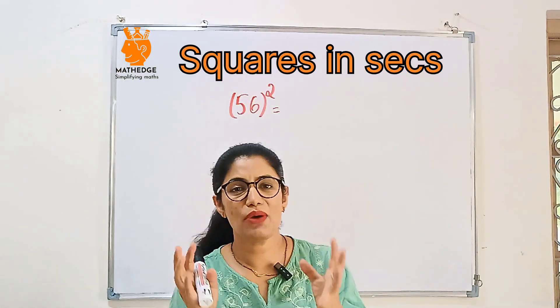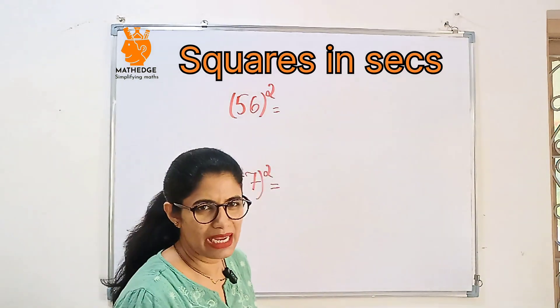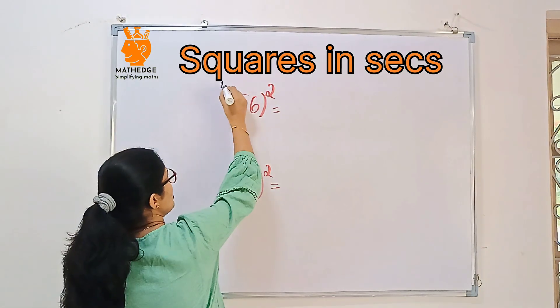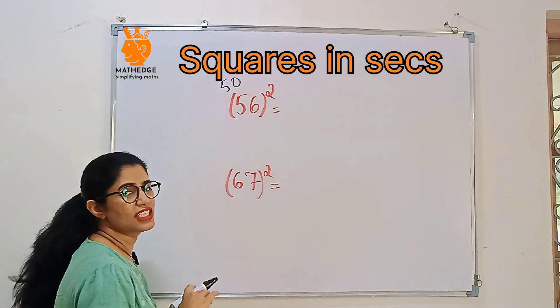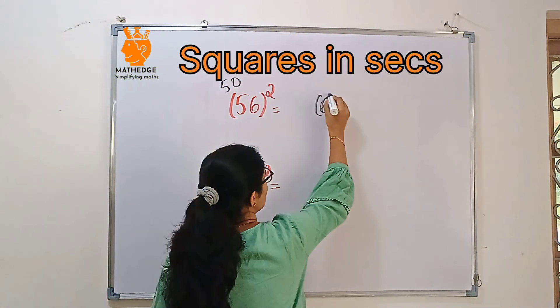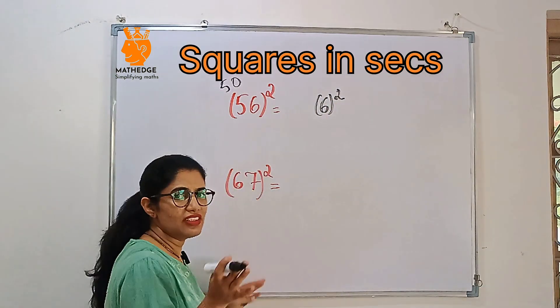Let's say the numbers are above 50. Here also we'll use the same trick with some little changes. See, here also we consider base 50. How far is 56 from 50? It's 6 more. So write that and square it.